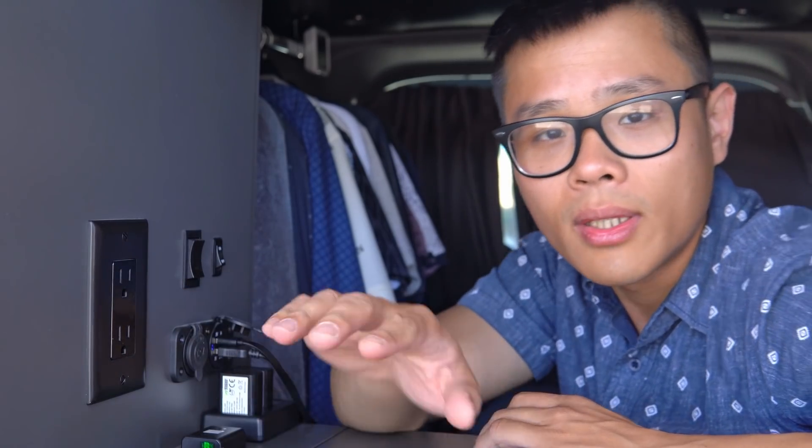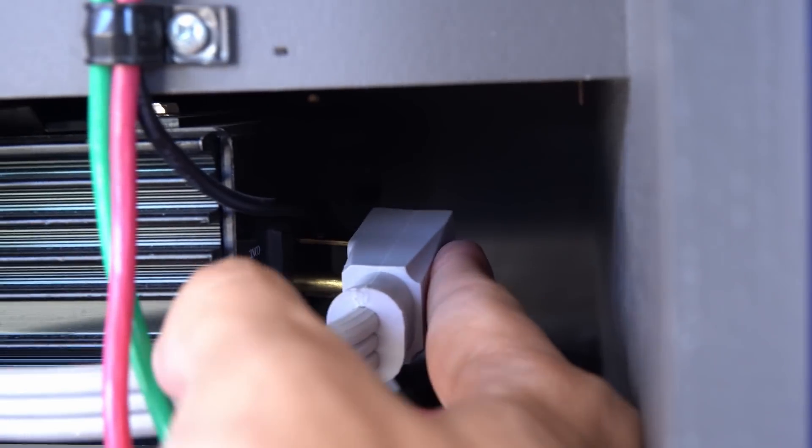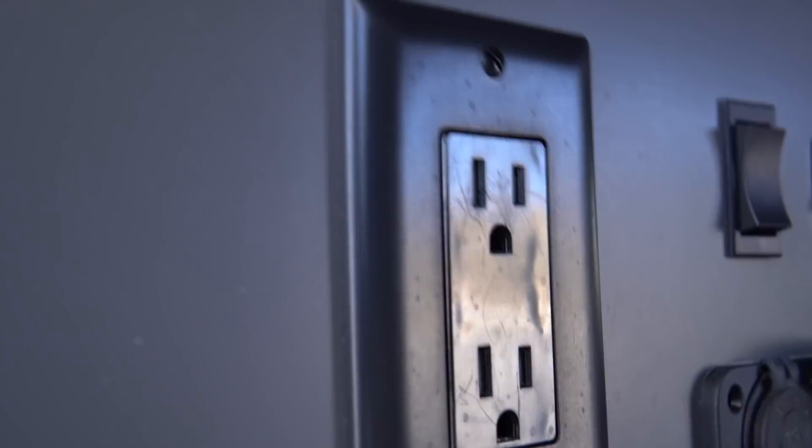On my Sprinter, I use an AC panel that has multiple slots so I can add a breaker for each appliance. In this van, the only thing that needs AC power is my wall outlet right here. It's a really basic setup with an extension cord plugged into the inverter and the other end wired to the outlet. Because this is the only AC device I have, there's no need for an AC panel.